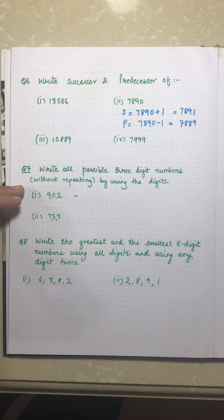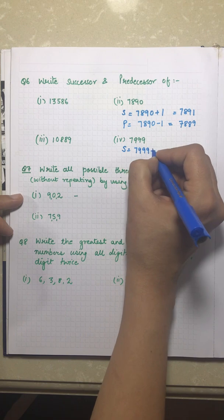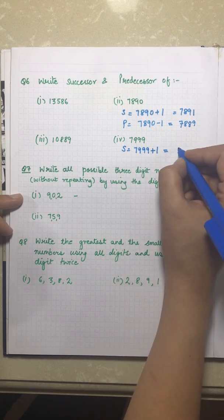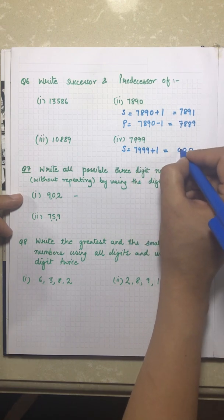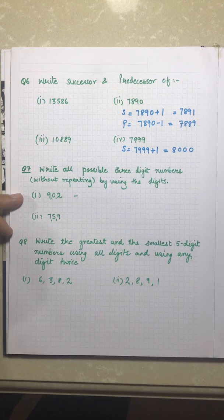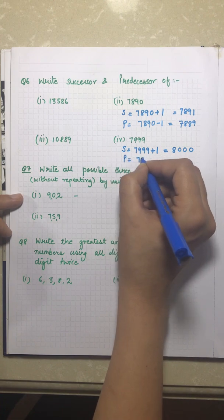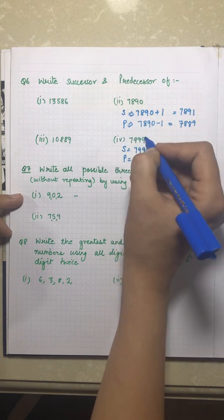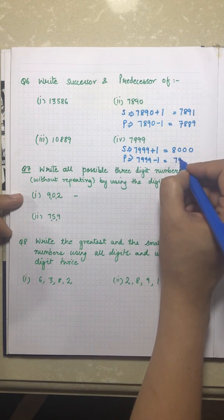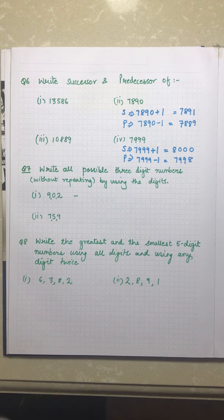For the next number, the successor of 7,999 is 7,999 plus one: nine plus one gives ten, carry one, nine plus one gives ten again, nine plus one gives ten, and seven plus one gives eight — so the answer is 8,000. The predecessor of 7,999 minus one gives 7,998. The other two parts are for you to solve.